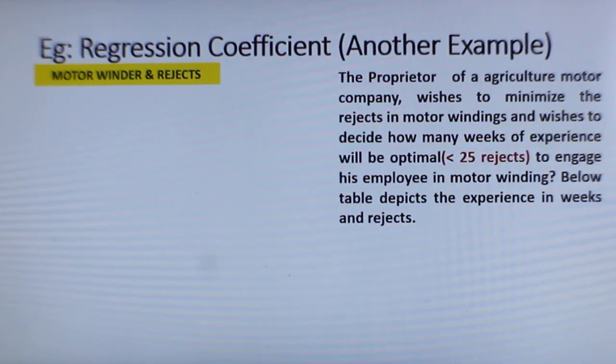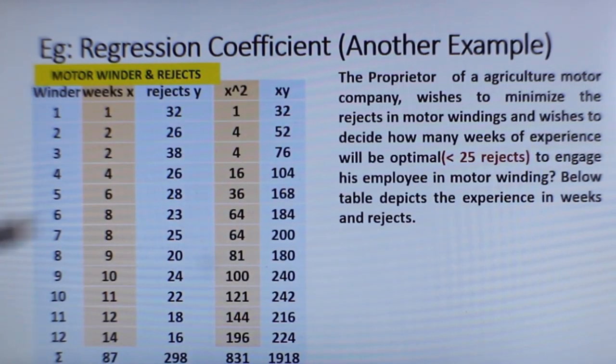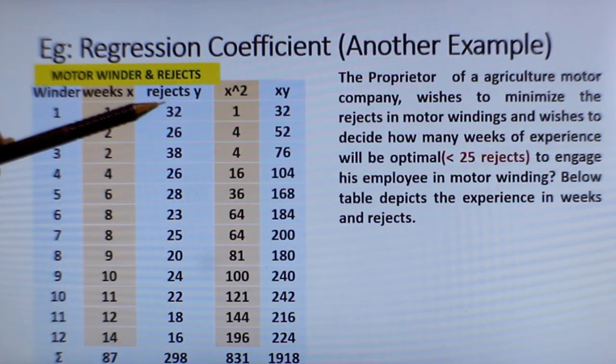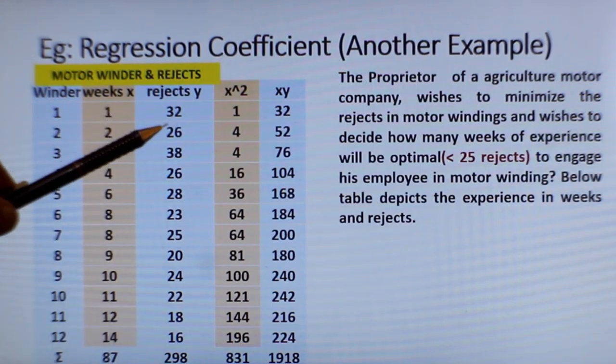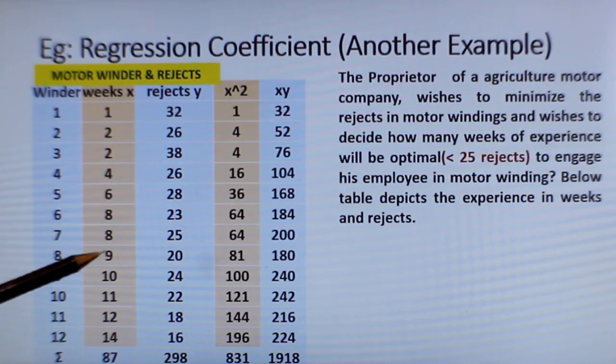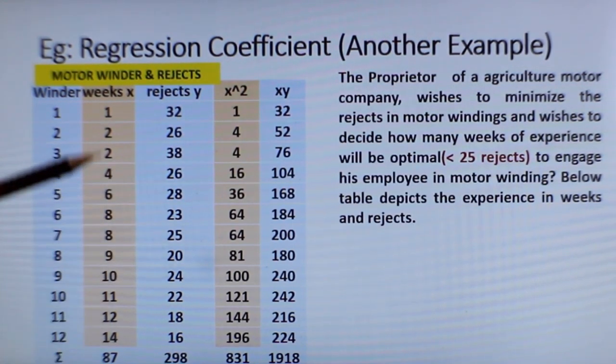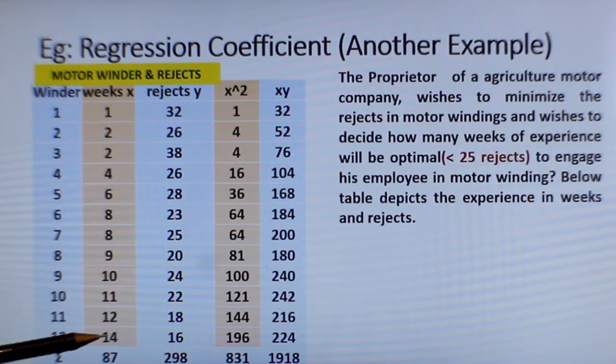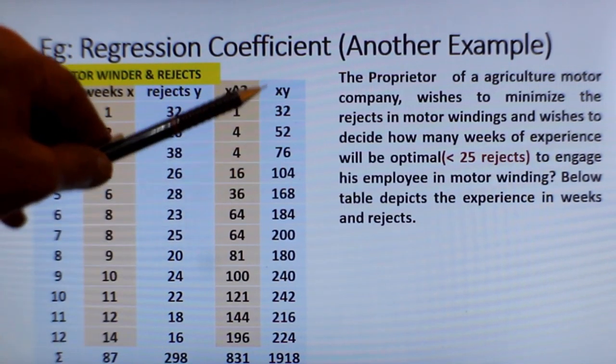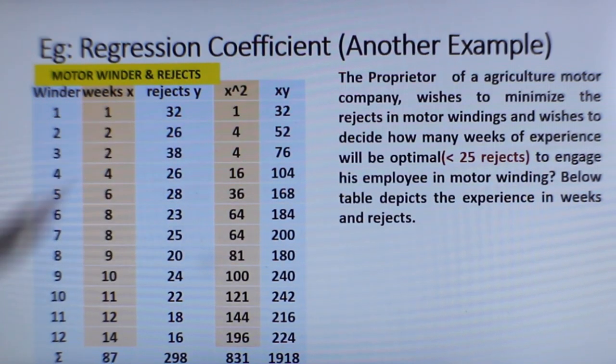We look at this example. This is motor winder and rejects. The proprietor of an agricultural motor company wishes to minimize the rejects in motor windings and wish to decide how many weeks of experience will be optimal if he plans to have less than 25 rejects to engage his employee in motor winding. Let us now understand this example and the data is provided in the table as shown. This is the different winders and their experiences and how much rejection they cost. With one week of experience, there are 32 rejects. With two weeks of experience, there are 26 rejects. Obviously, you will find that as the experience becomes more and more, the reject rate is reducing also. These are all the other two elements that you are required to calculate using the table.